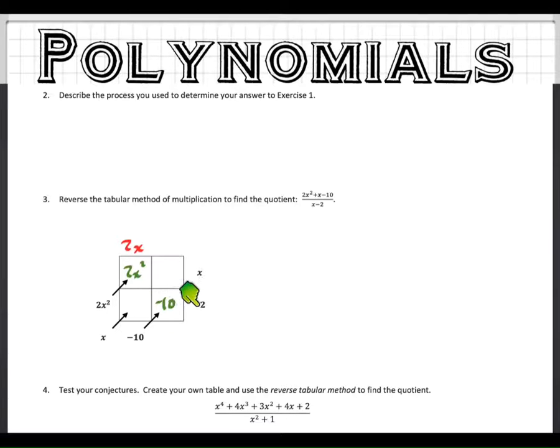Now look at this one right here. How would you get negative 10 if this is a negative 2? What would you have to multiply it by? 5. So you got those two right now, and now you know the answer. 2x plus 5. That's the answer to this division problem.